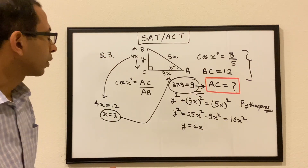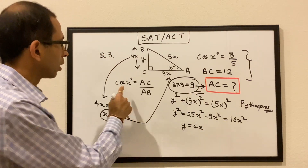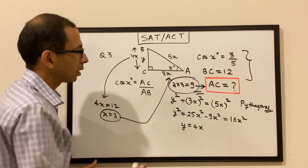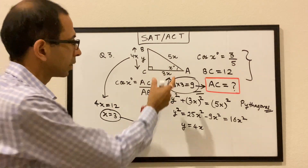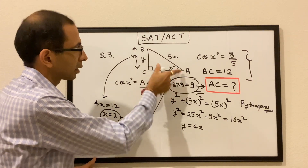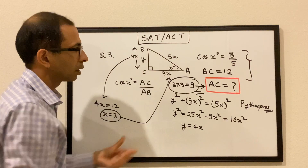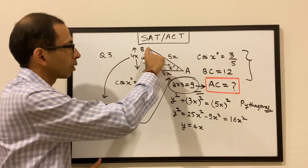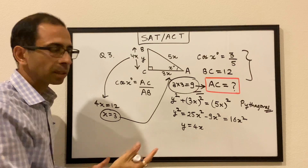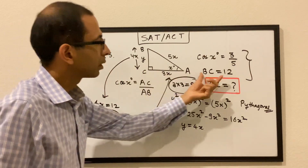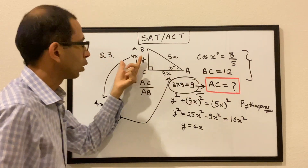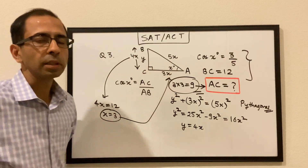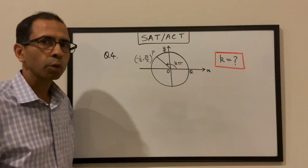To quickly reiterate: cos of x = AC over AB, we set AC = 3k and AB = 5k, used the Pythagorean theorem to find BC = 4k in terms of k, then used the actual length BC = 12 to get k = 3, and plugged back in to get AC = 9.